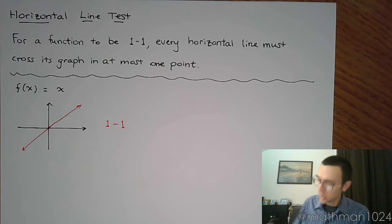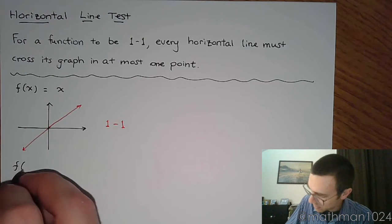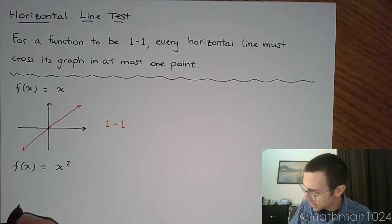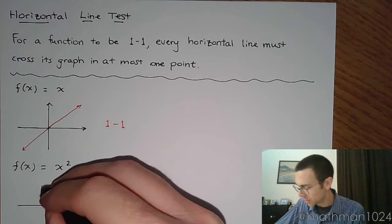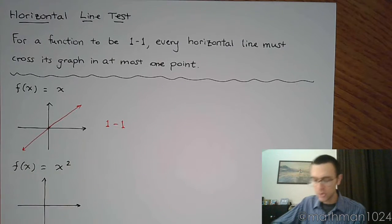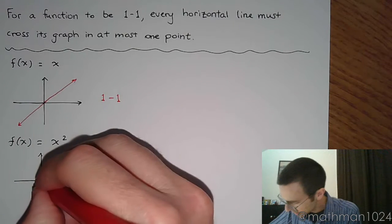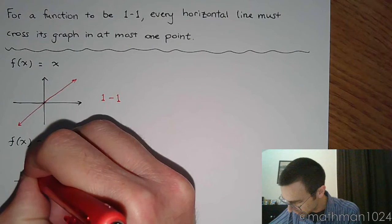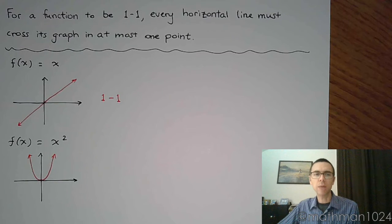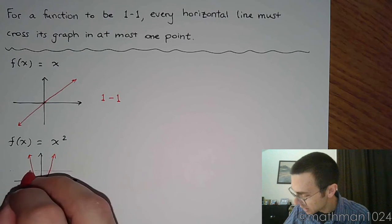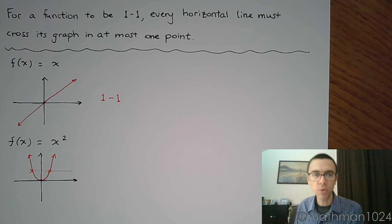The next parent function was f(x) equals x squared. This is your classic parabola, your squaring function, and here is the shape. You can tell that when I do a horizontal line, it's going to cross it in more than one point.